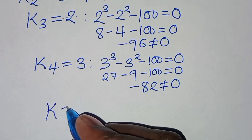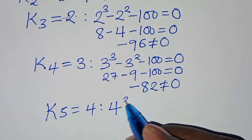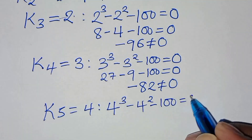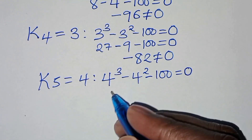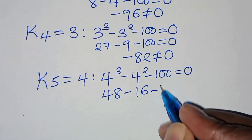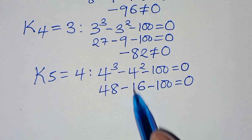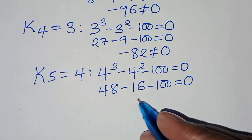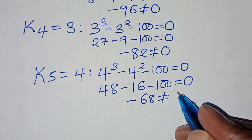Let's move to k₅ equal to 4. We have 4³ minus 4² minus 100. That gives 48 minus 16 minus 100, and 48 minus 16 equals 32, so 32 minus 100 equals negative 68, which is not equal to 0.